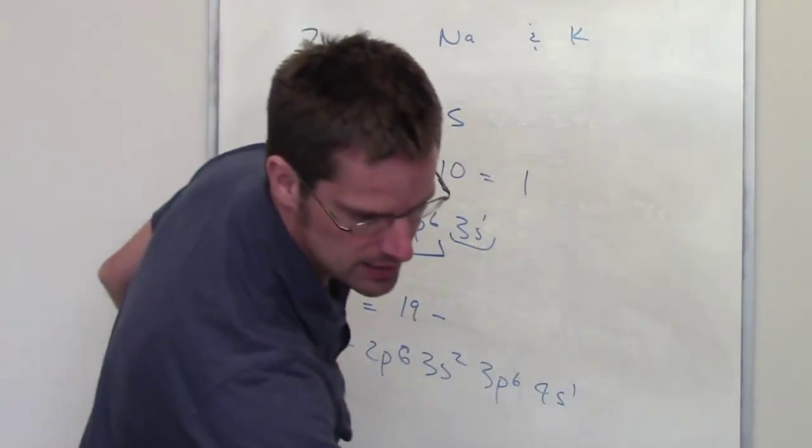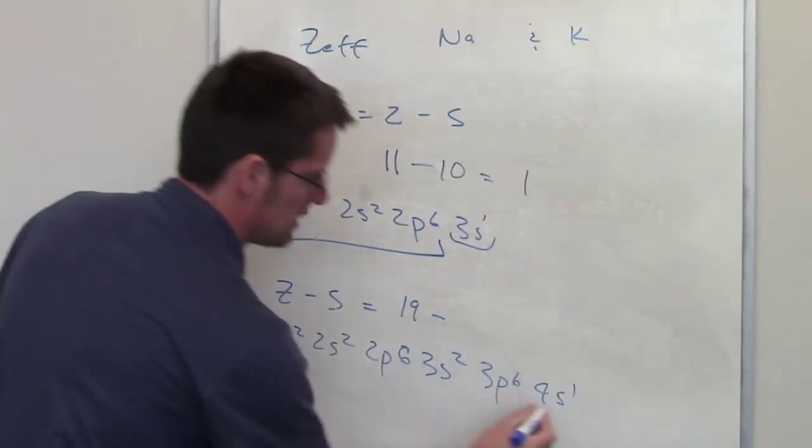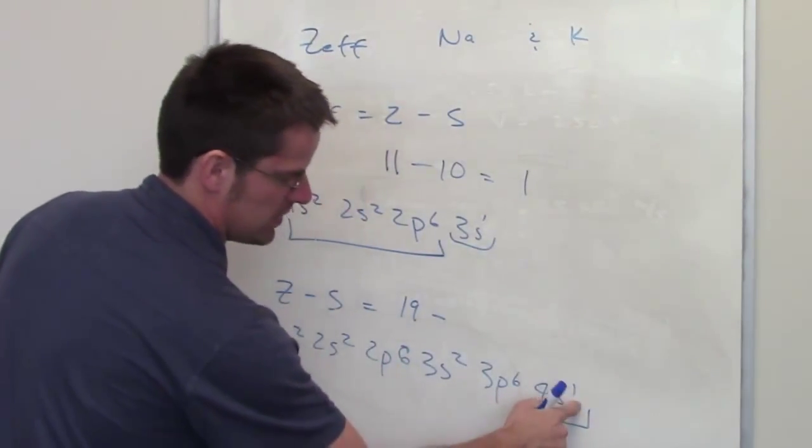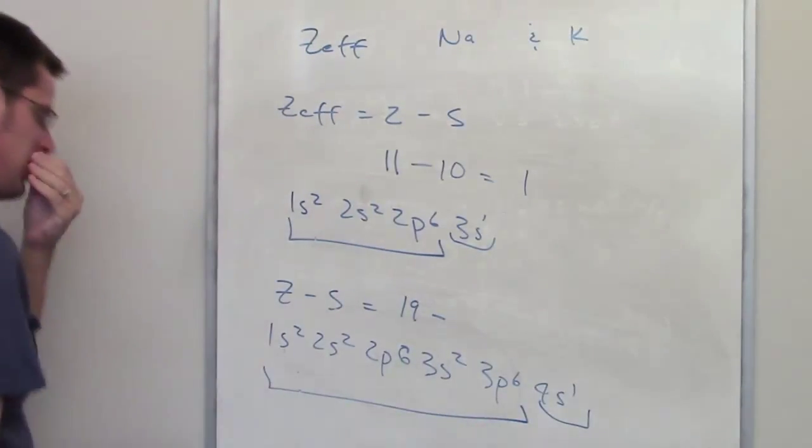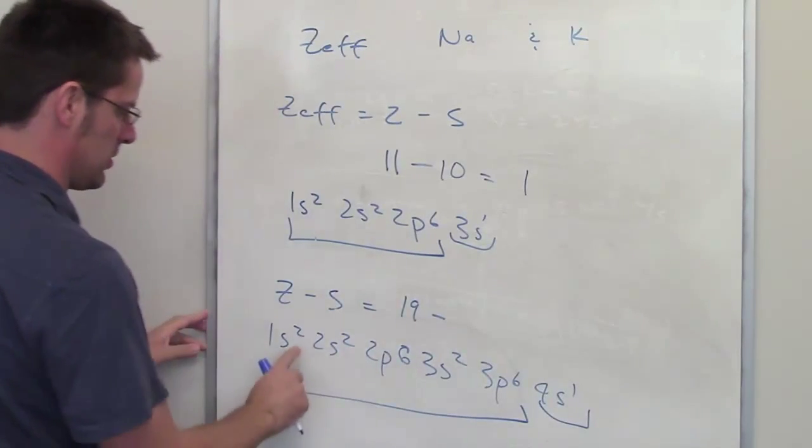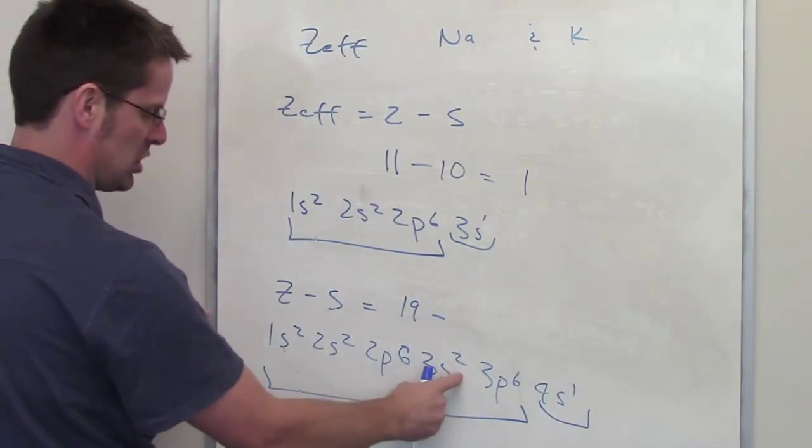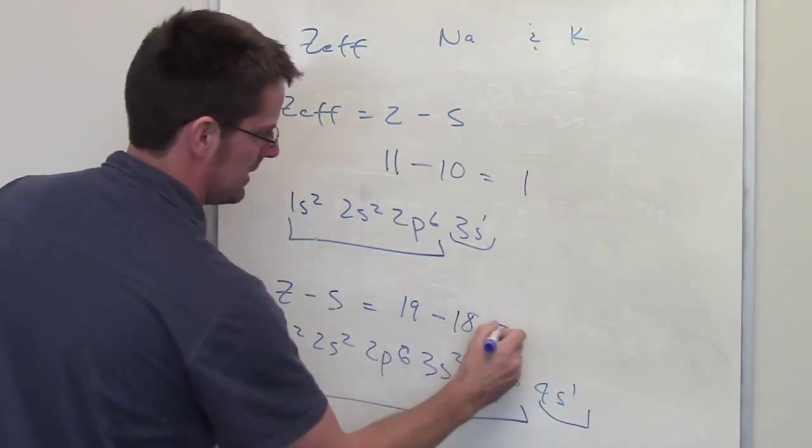And that's a 4, not a 9, in case my handwriting looks horrible. In the case of potassium, this 4s electron is its outermost electron, while all of these are the inner shell electrons. So S is going to be equal to the sum of all of these electrons: 2 plus 2 plus 6 is 10, plus 2 is 12, plus 6 is 18. So 19 minus 18 is 1.